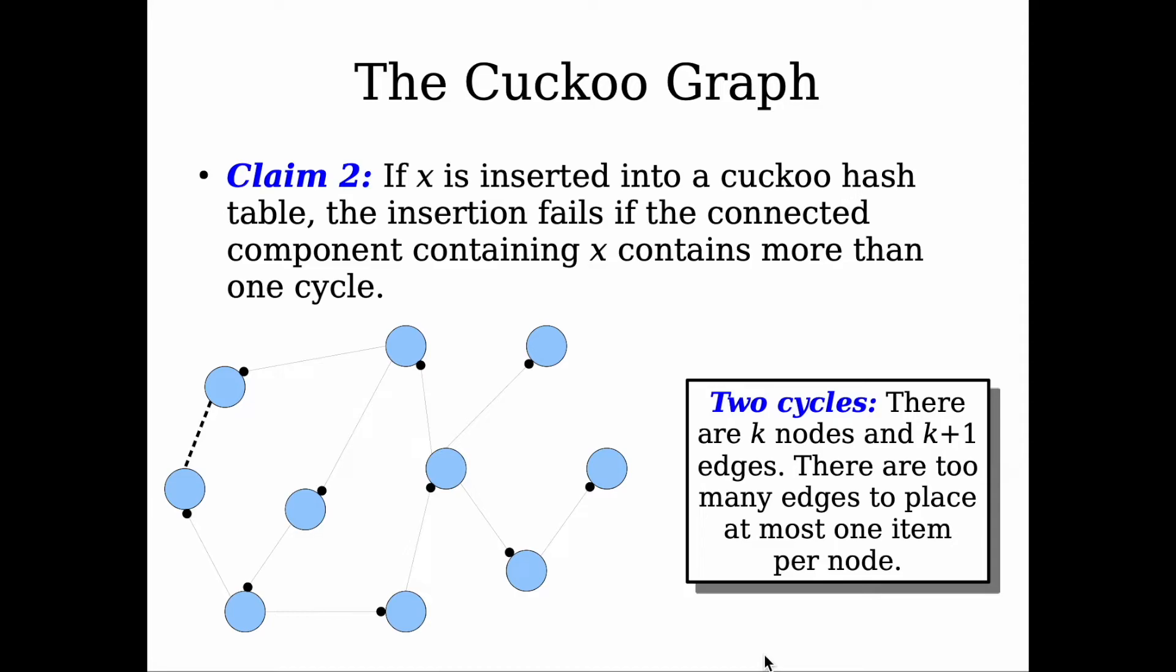However, if we allow more than one cycle, like two cycles, that will involve an additional edge from our previous case. And since our previous case includes k edges, we will now have k plus one edges. However, the concern is we only have k slots.